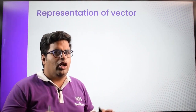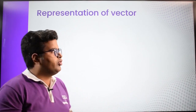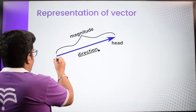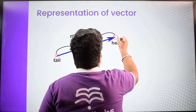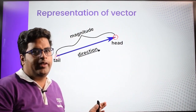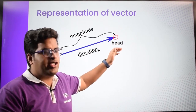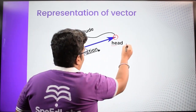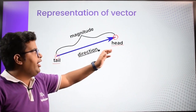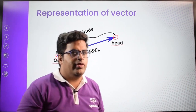Now let's see the representation of a vector — how we are going to represent a vector. A vector has a tail, which is the starting point, and a head, which is the ending point. The initial point is called the tail and the final point is the head. The direction is from tail to head, and the length of the arrow represents its magnitude.